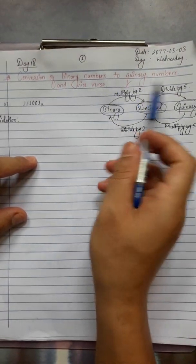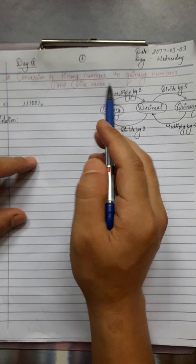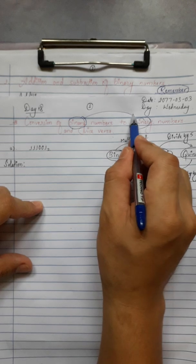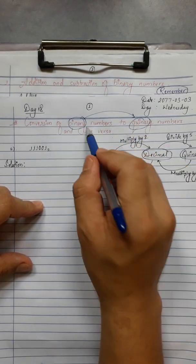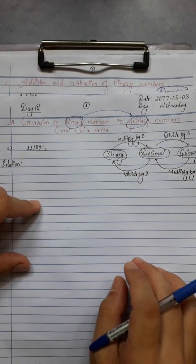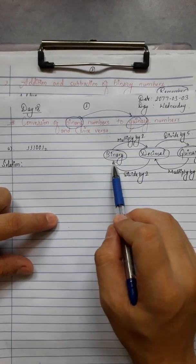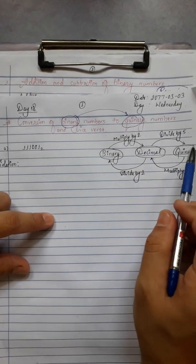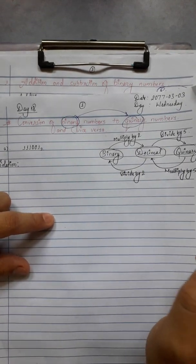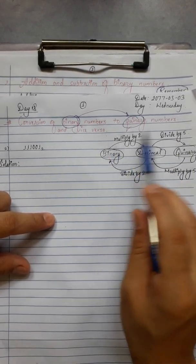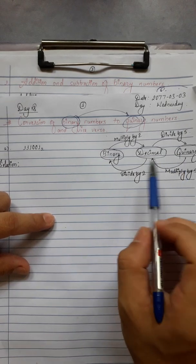Key question: conversion of binary numbers to quinary numbers and vice versa. To convert binary to quinary, we can't do it directly — binary to quinary directly is not possible. So first we convert binary to decimal, then decimal to quinary, working in two steps.